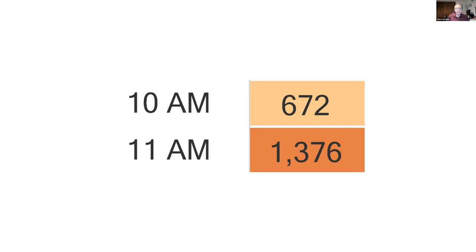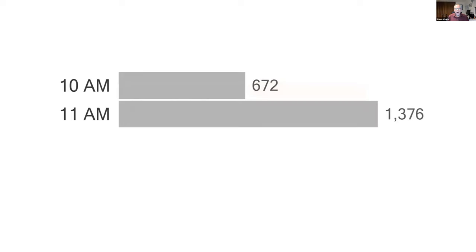Look at the bars. 11 AM is 1,376, 10 AM — I can take away the numbers and I can see 11 AM is about twice as big. Not even thinking about it. Let me show you a quote: 'We can say that one shade is darker than the other — that is obvious. But to say that it is two or three times as dark is not visible. It is not readable.' Do you know who said that? Charles Menard in 1861.